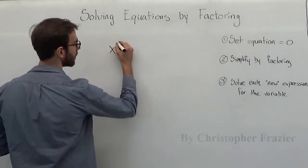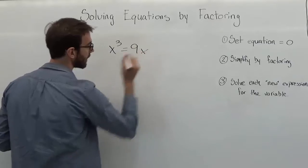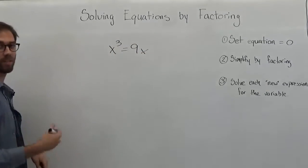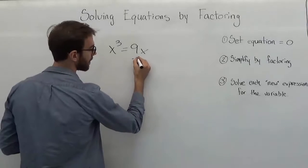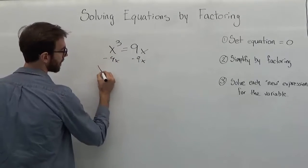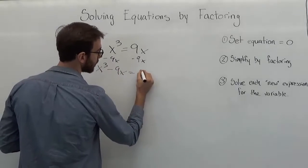Let's try an equation: x to the third is equal to 9x. And we see here, the first thing we want to do is set our equation equal to zero. We can do that by subtracting 9x from both sides. Now we'll have x to the third minus 9x is equal to zero.